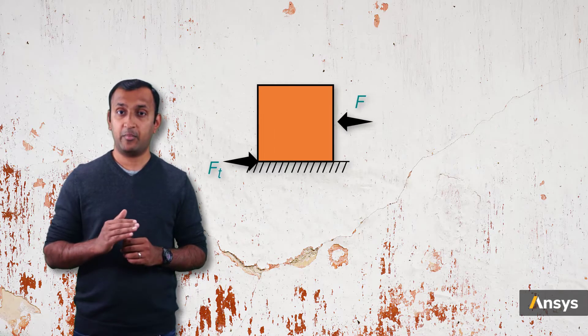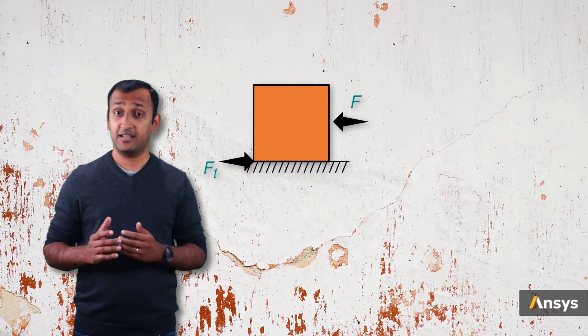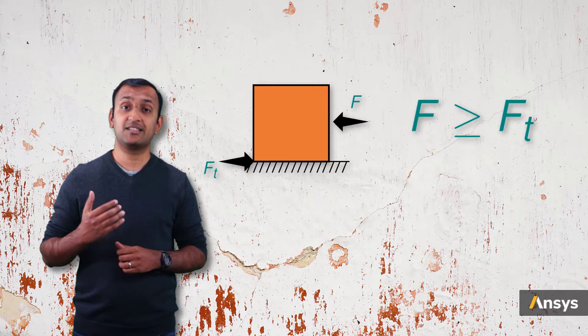When the applied force is ramped up beyond the product, the body starts sliding, and this state is called the slipping state.